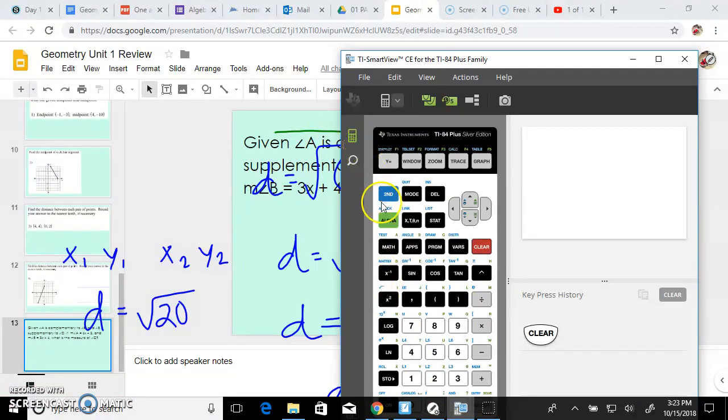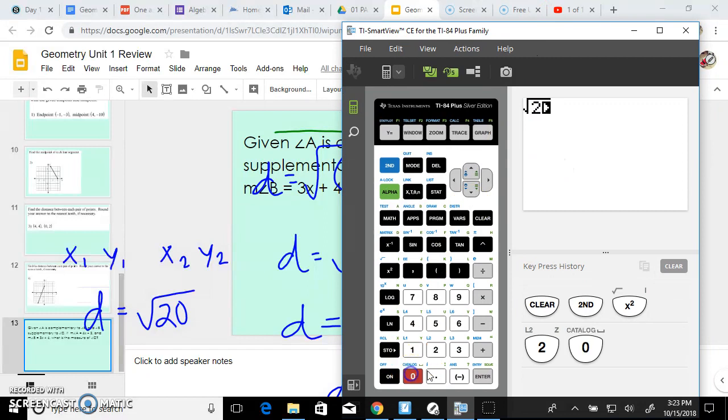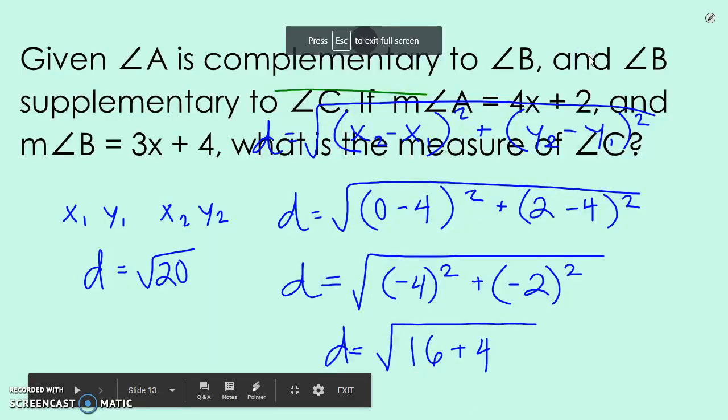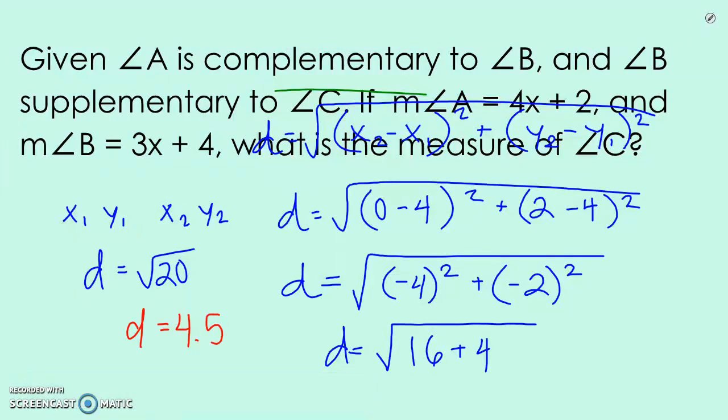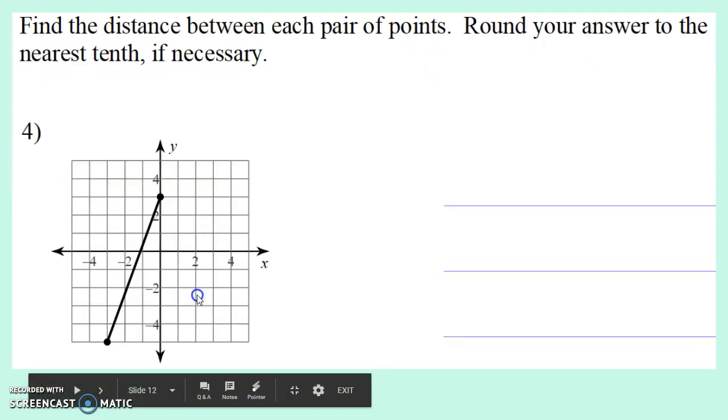So, second, x2, and 20. So they want the nearest tenth. That's the first decimal place. So that means we have to look at the second. That's 7. That will round 4 up to 5 for a final answer of 4.5. Final answer of 4.5. So we'd say the distance is 4.5.